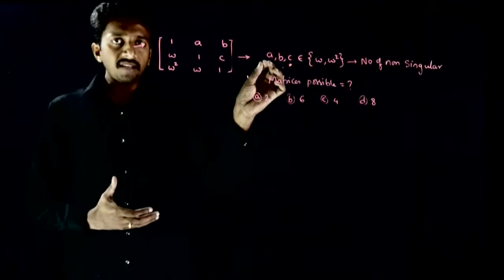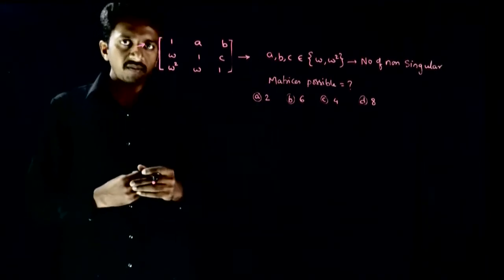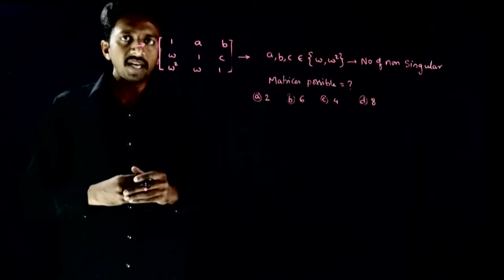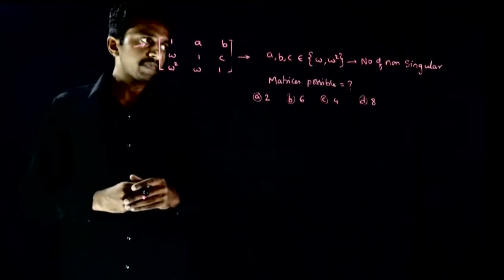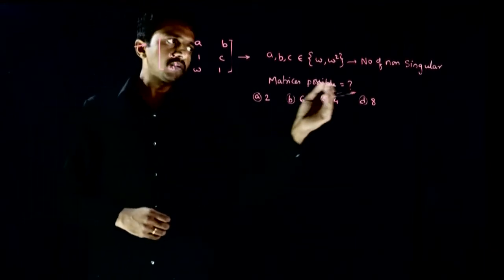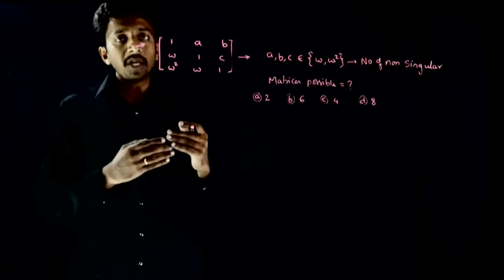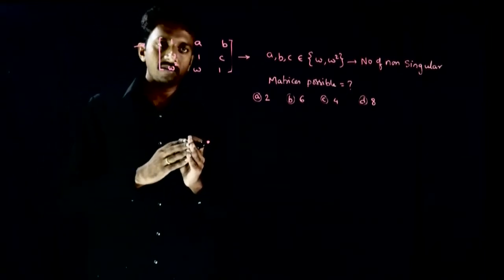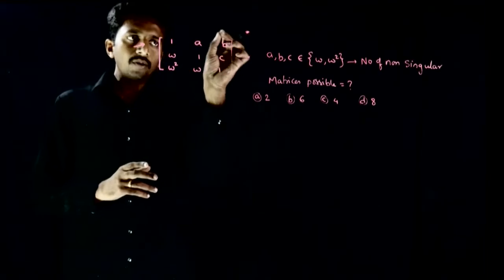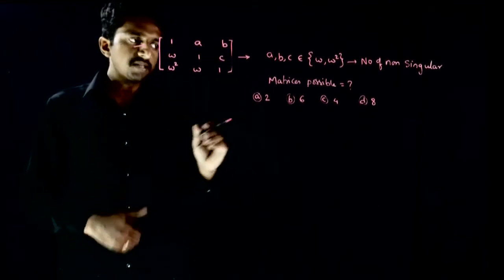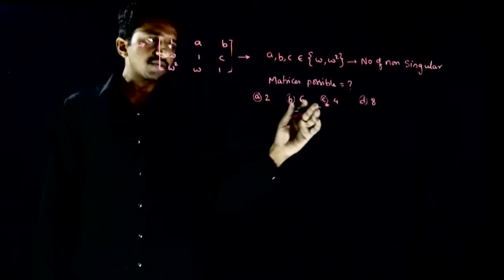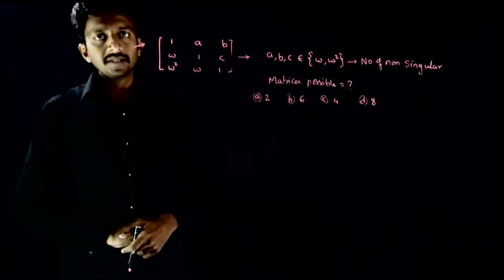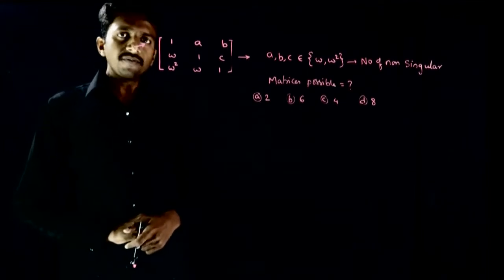So a can be any one of ω or ω², b can also be any one of ω or ω², and c can also be any one of ω or ω². The question is: how many non-singular matrices can be formed out of this a, b, c? The answer choices are 2, 6, 4, and 8.